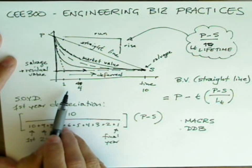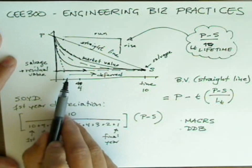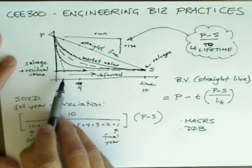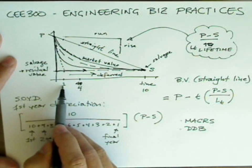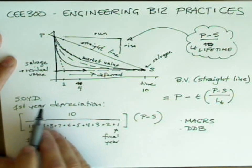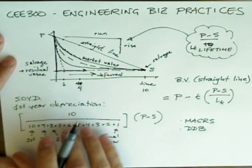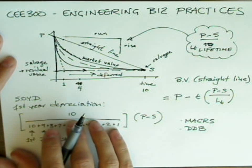But as we know from our study of time preference of money, we'd much rather defer taxes than pay them up front. This is why it was part of the stimulus package, because if you can defer the taxes on a purchase, you'll make the purchase sooner, and that will help the economy.